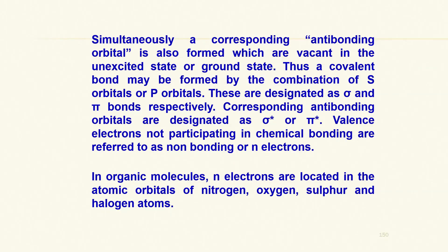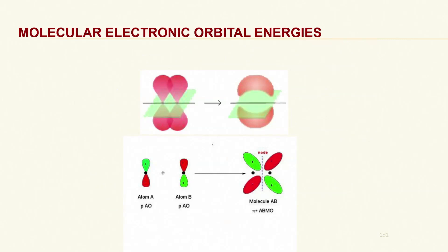Valence electrons not participating in chemical bonding are referred to as non-bonding or n-electrons. In organic molecules, n-electrons are located in the atomic orbitals of nitrogen, oxygen, sulfur, and halogens.